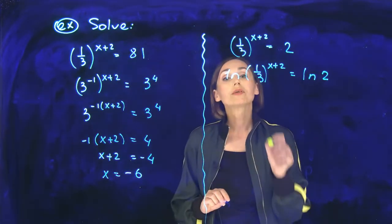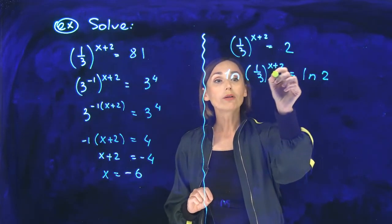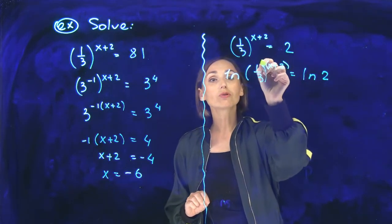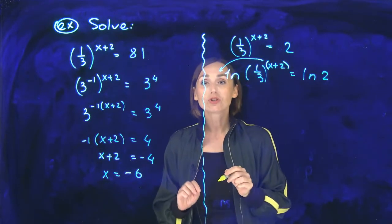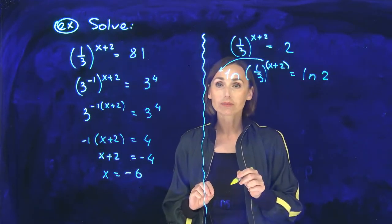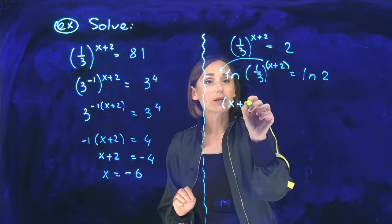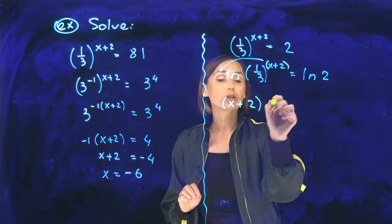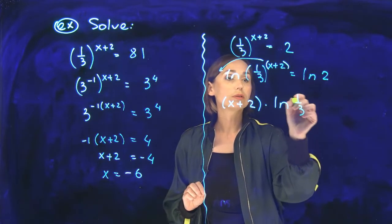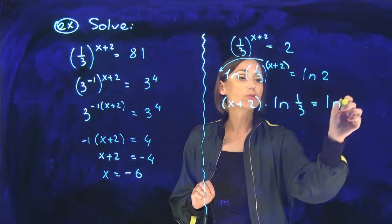Here, natural log of one-third to the power x plus 2. This exponent could be written as a coefficient upon the log function. This is the property. Let's write x plus 2 times ln of one-third equals ln of 2.